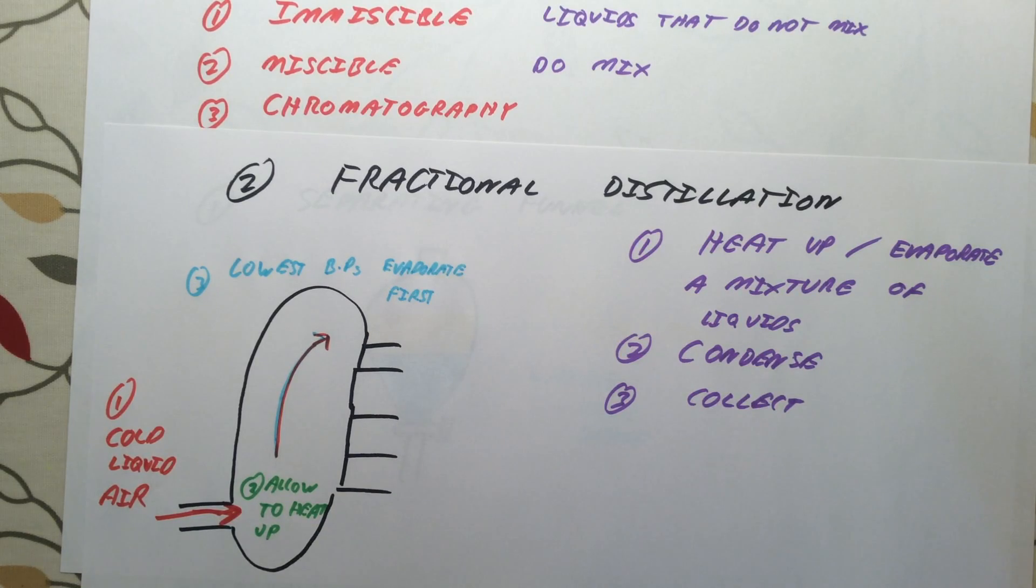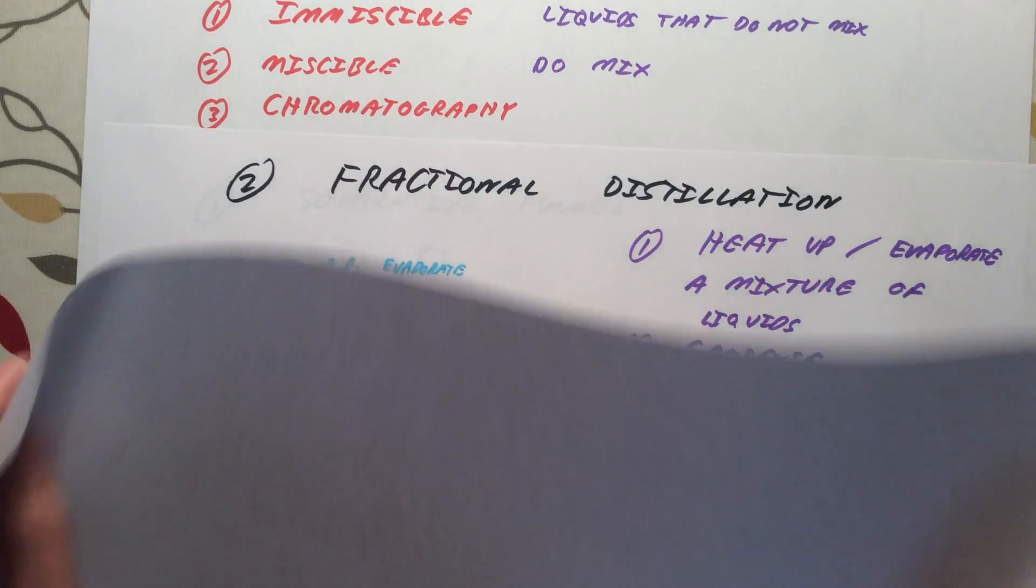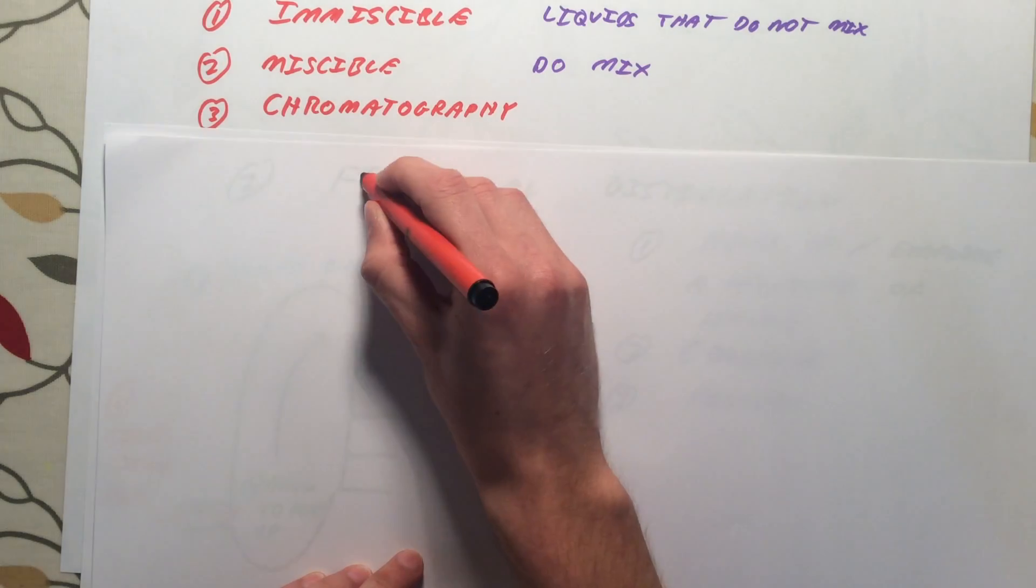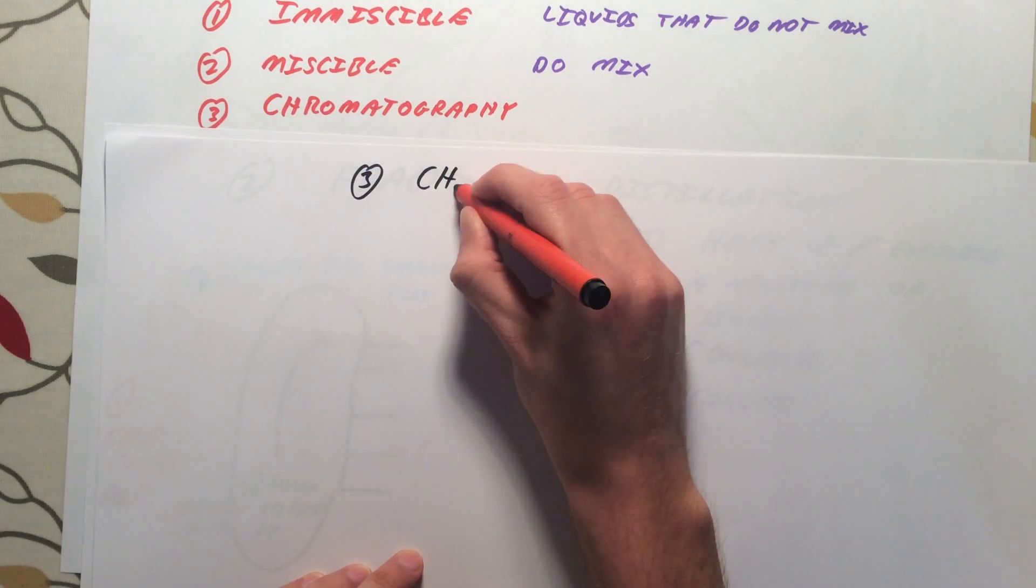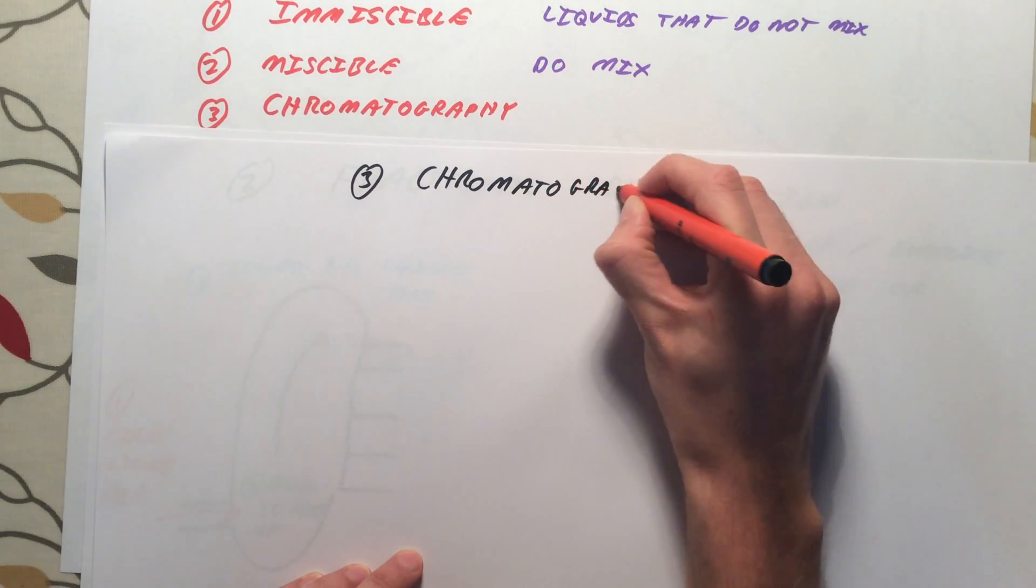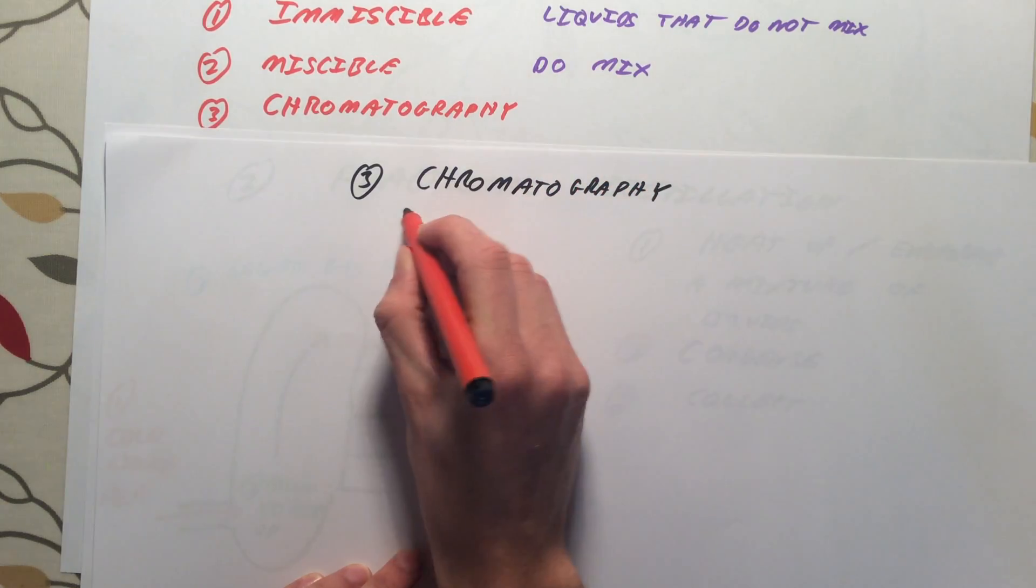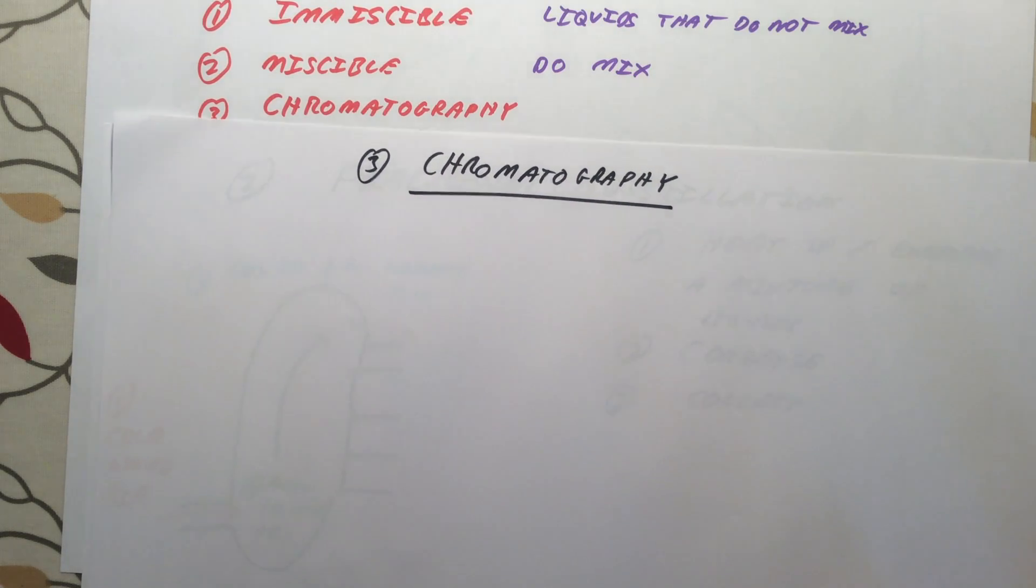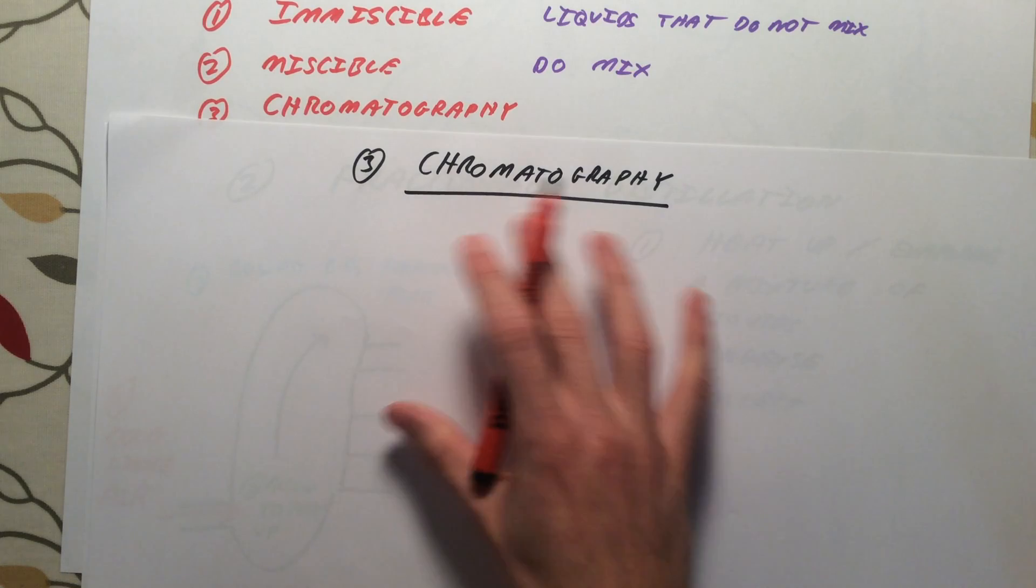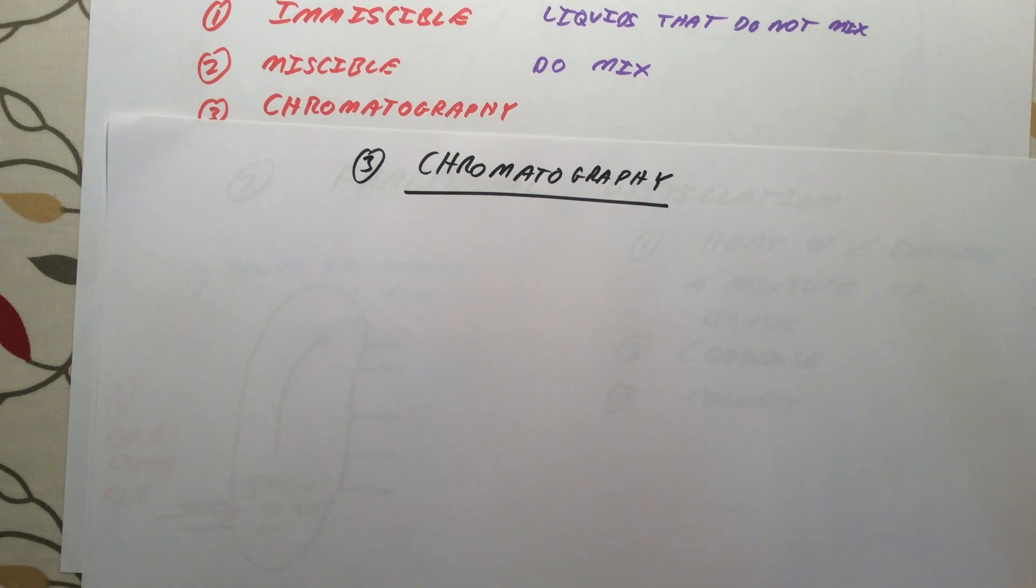The third separation technique which you need to know about is chromatography. This is again used to separate miscible liquids generally. Well, in particular, things like ink, coloured substances, often food colourings. You do use chromatography in chemistry later on if you go to college or university. This is kind of an introduction using what we call paper chromatography.